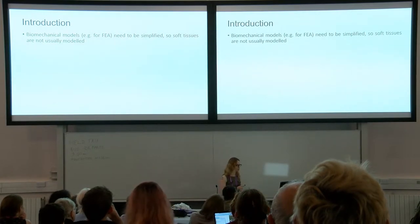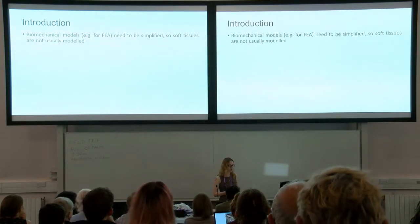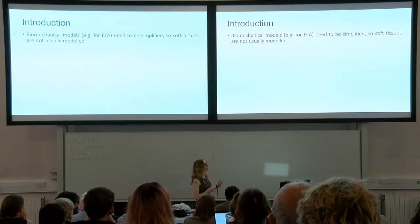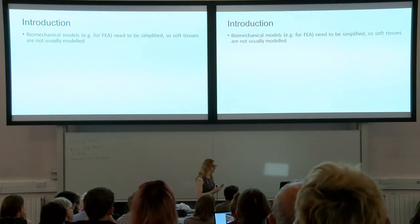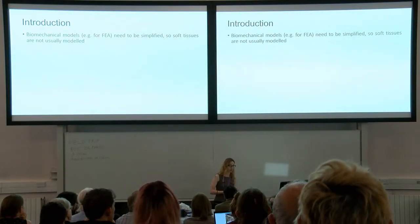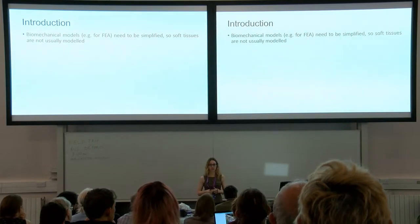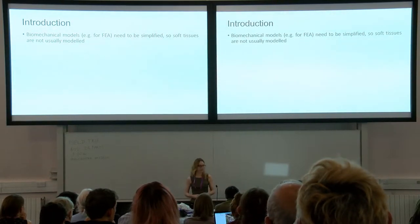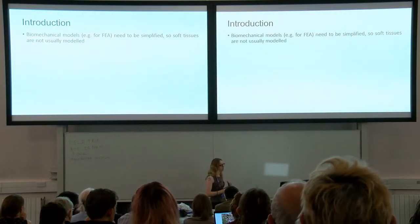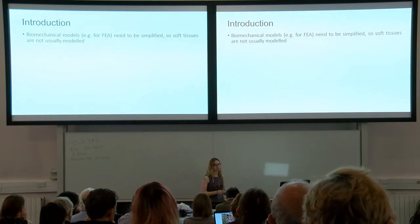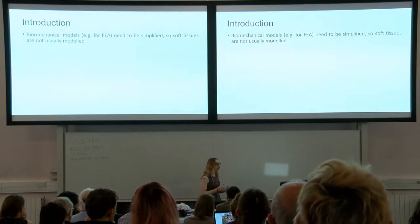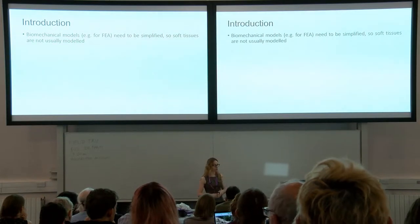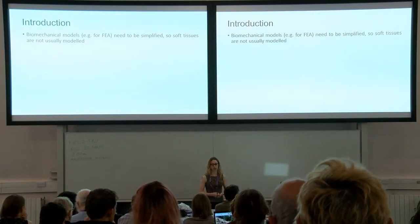With biomechanical models we often need to simplify them because they are very complex. One of the easiest ways to simplify a model is by removing soft tissues or other things we don't have very good information about the material properties. We often simplify by using one material property for the bone, or not including sutures or soft tissues, because these have very complex material properties and we still don't really have a good understanding of those.